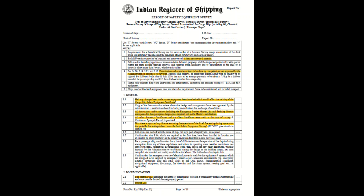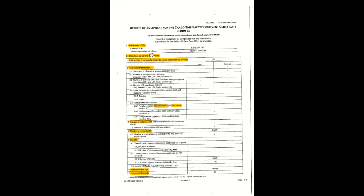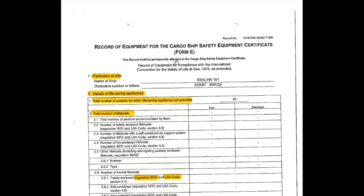Moving on to the Cargo Ship Safety Equipment Certificate, also called Form E. The moment you are asked about explaining the SEQ survey, I would suggest that you go as per the three main points: you talk about the particulars of the ship, details of the life-saving appliances, and details of the navigation systems and equipment.